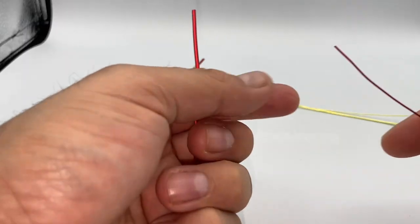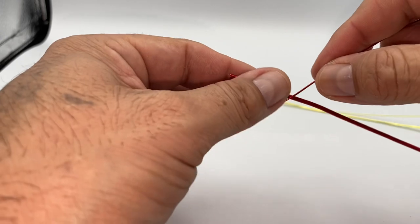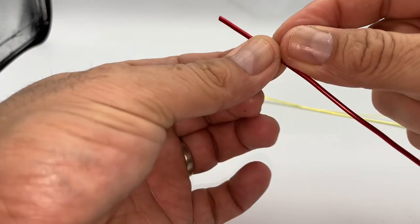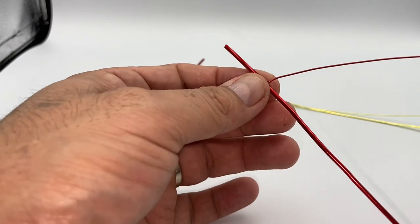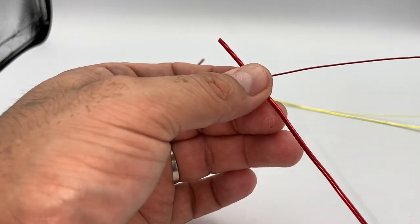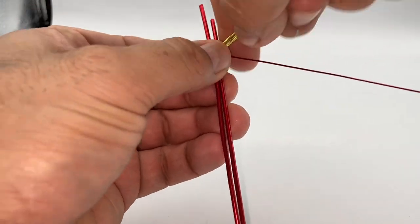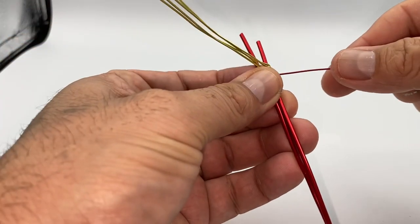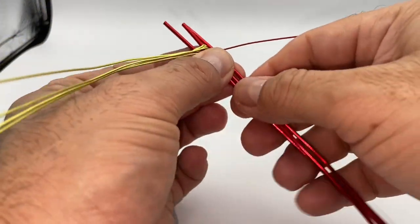Now I'm going to take another of the core wires and I'm going to wrap my weaving wire around it once just to secure it, just like that. And then let's take this piece of wire with the two yellow ones.